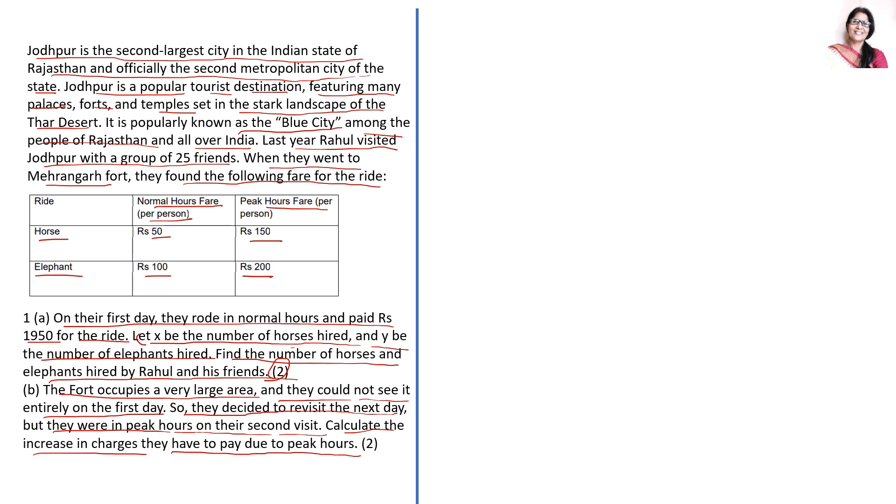Here it is already given: take the number of horses as X and number of elephants as Y. So we will start from there only. Let number of horses hired be X and number of elephants be Y. Now, these are the variables. Now we will make the equation.